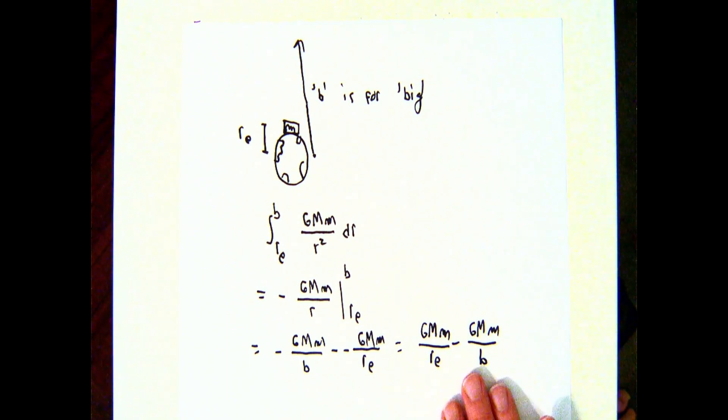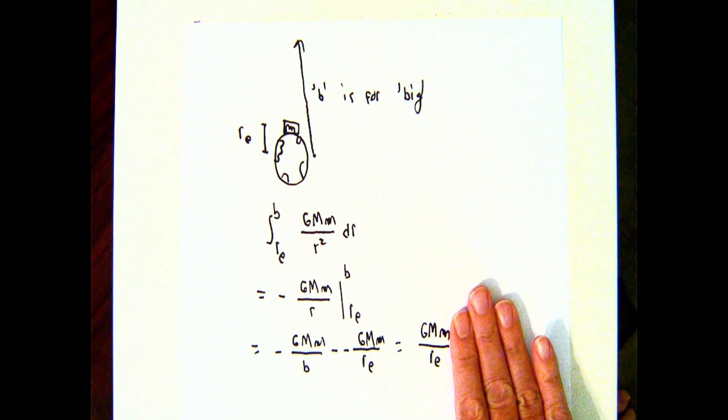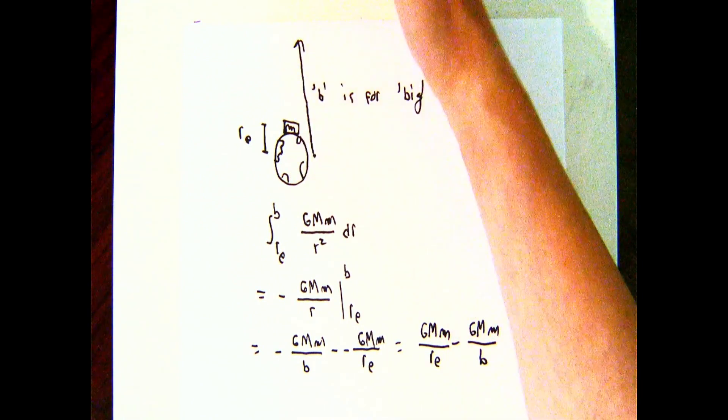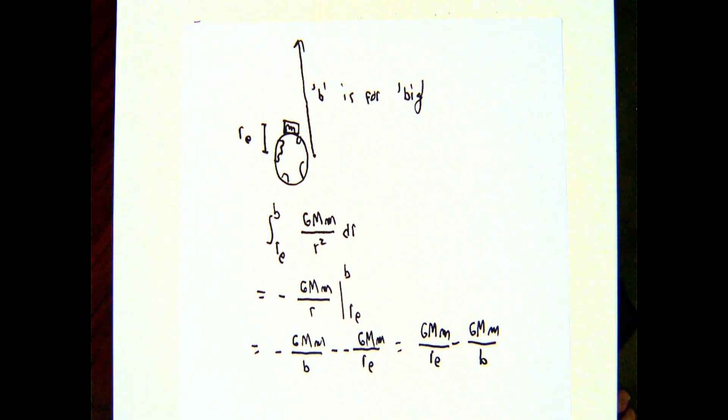In this calculation, as b becomes indefinitely big, the first term containing no b remains whatever value it is, and the second term tends to zero. If I supply an object with this amount of work, or energy, I can move it as far away from the center of the Earth as I like. This is related to a concept called escape velocity, and we may talk about that at some point.